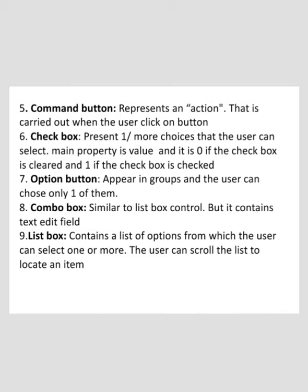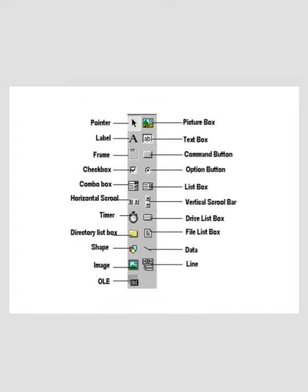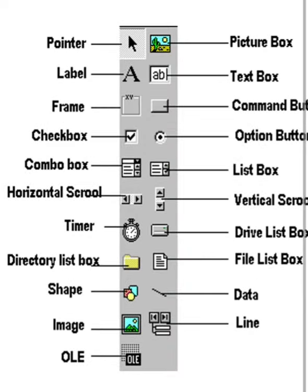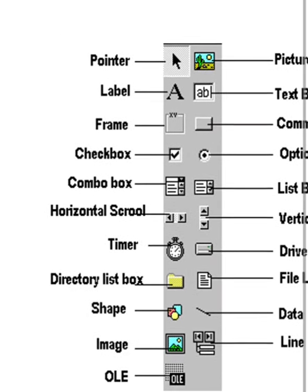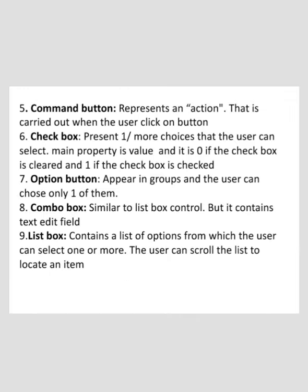The next is the Combo Box. It is similar to the List Box control, but it contains a text edit field. The user can choose an item from the list or enter a new string in the edit field. The next is the List Box. It contains a list of options from which the user can select one or more, and the user can scroll the list to locate an item.